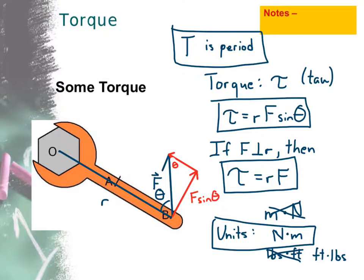These two formulas are very important. Remember that theta is the angle between the force and the radius. If they're perpendicular, then sine theta is 1, since sine of 90 degrees is 1, and it just becomes R times F.